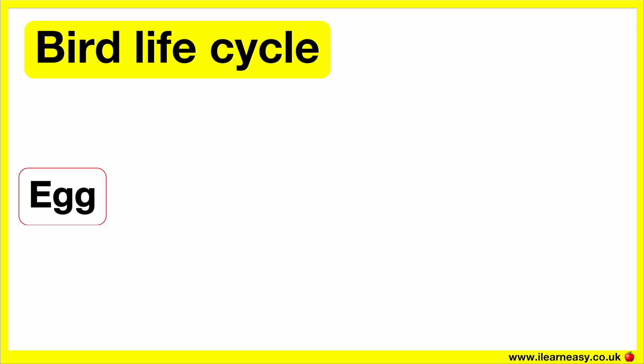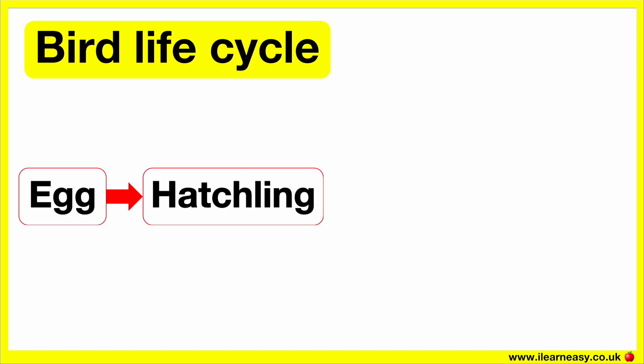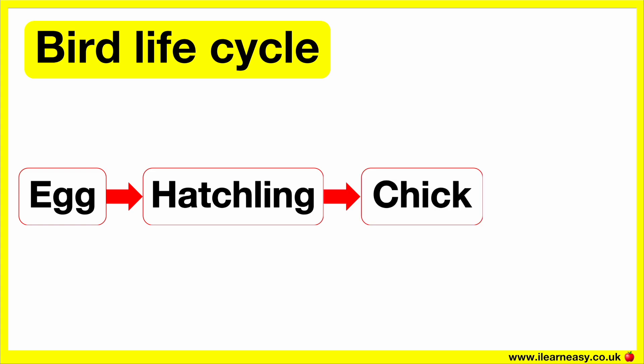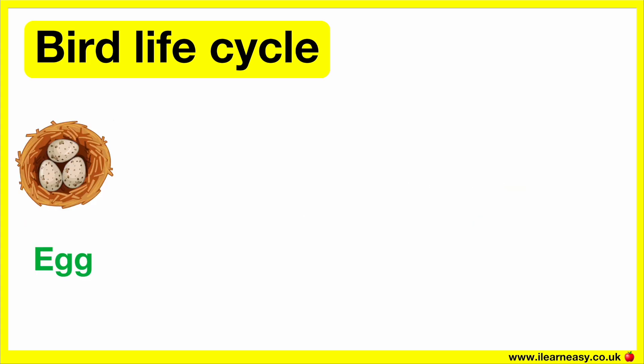The four stages are: egg, hatchling chick, and adult. First, the bird lays an egg. This is usually in a nest, where the egg is incubated by one or both parents.